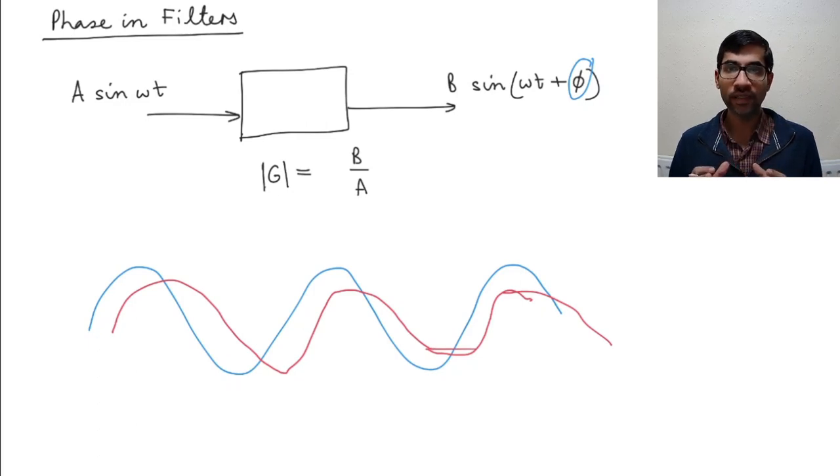And so basically our filters are doing two things. They are changing the amplitude of your sine wave, but they are also adding some phase onto your signals. And both of these components are really important.